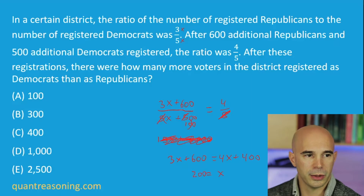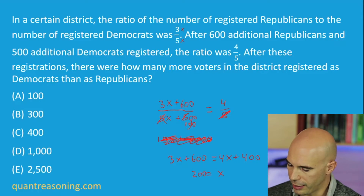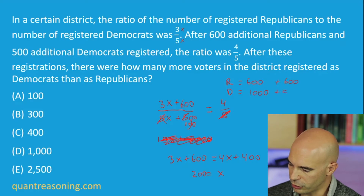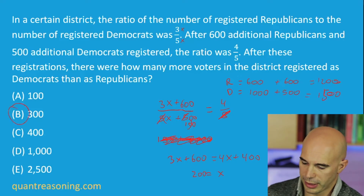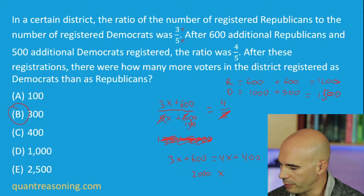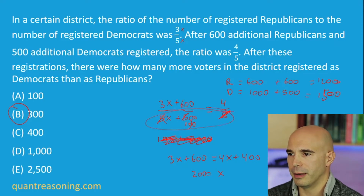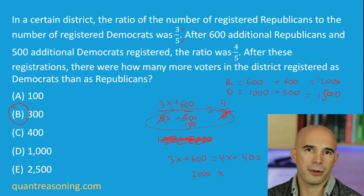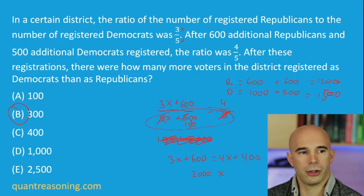Subtracting 3X and 400 from both sides, I find that the scale factor was 200 for the original ratio. So the actual number of Republicans was 600 and Democrats was 1,000. Adding 600 and 500 respectively gives 1,200 and 1,500 — a difference of 300. That's the algebraic solution. Can it be done in two minutes? Yes, especially if you think to expand by a factor of 5. Even without that shortcut, it's possible if your algebra is strong.